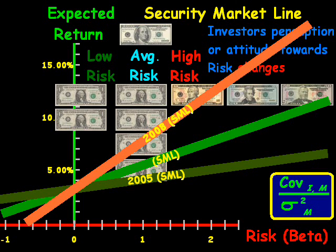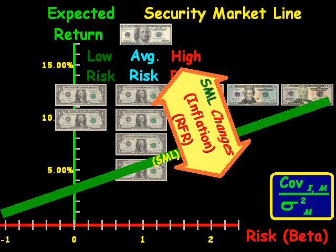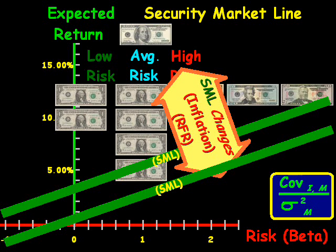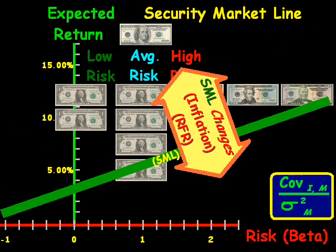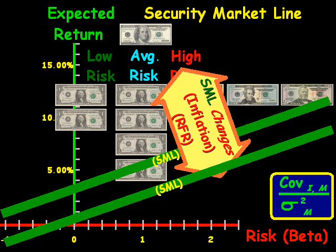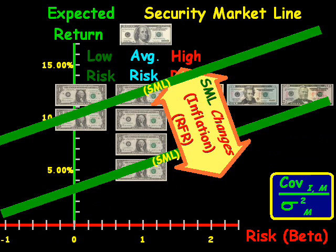The third way the SML can change is an upward or downward parallel movement in the line. This relates to two factors: inflation and the risk-free rate of return. If inflation goes down, the SML shifts down in a parallel fashion; if inflation goes up, the SML shifts up in parallel. Similarly, if interest rates are cut, the SML moves down in a parallel movement, and if interest rates are rising, the SML increases because investors would require a higher rate of return.